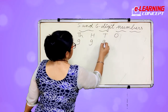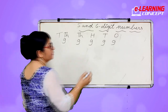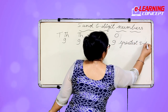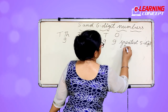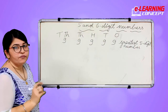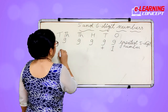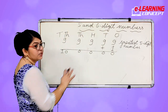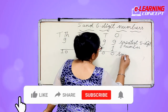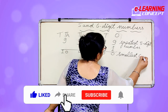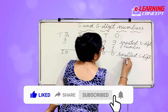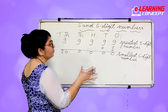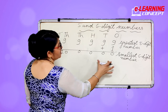Now, six digit numbers. This is the greatest five digit number — 99,999. If we add one to this number, what will happen? This is the smallest six digit number. Nine, nine, nine, nine, nine — this is the greatest five digit number. If we add one to this number, that gives us the smallest six digit number.